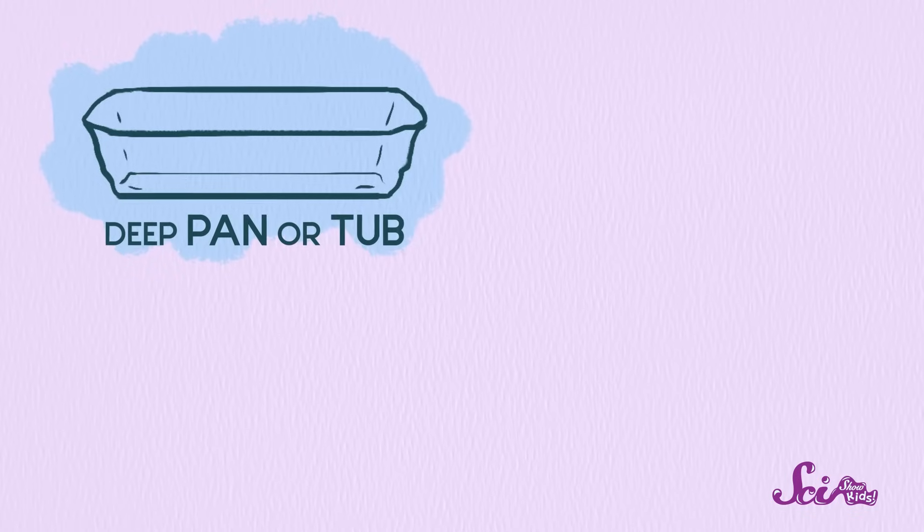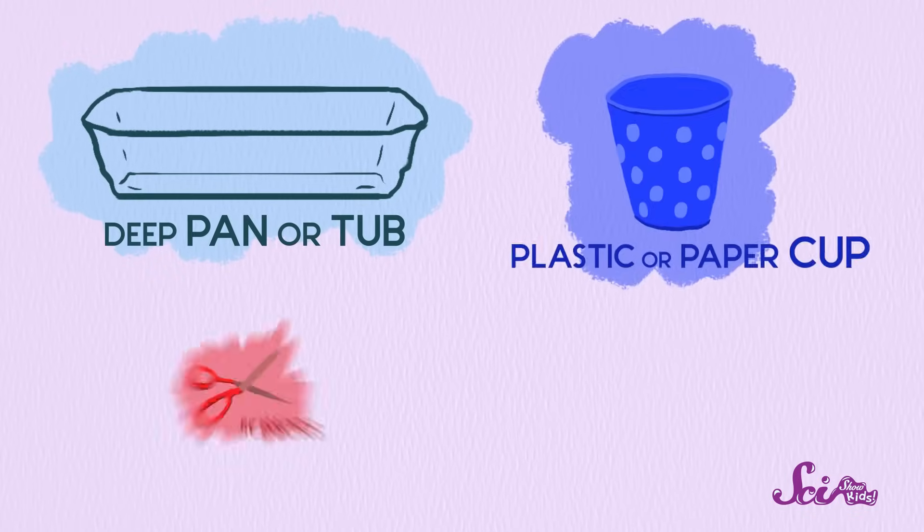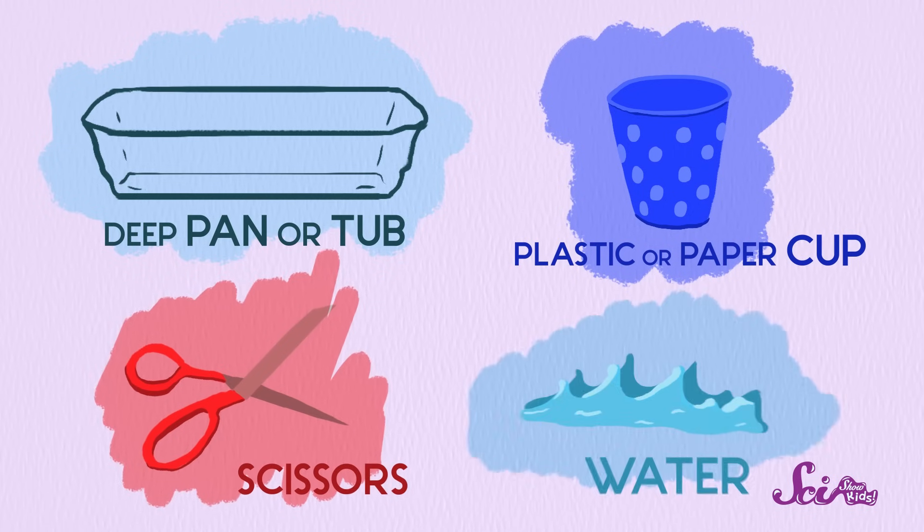We're going to create our own mini-landscape to see how water can cause erosion to change our landscape into something different. Before we gather our supplies, we're going to make sure we're in a place that's okay to make a mess. We'll need a deep pan or a tub, a plastic or paper cup and some scissors so we can poke a hole in it, some water, and something to make our mini-landscape with. You can use sand, or potting soil, or anything that's made of little pieces that can move from one place to another.